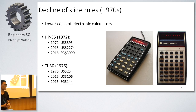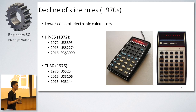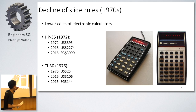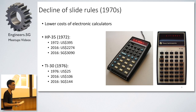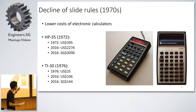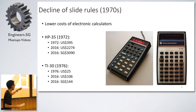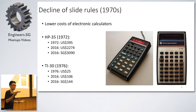So the decline of slide rules — there's a reason why these things do not exist today. The primary reason is the lower cost of electronic calculators. My dad bought this in 1973. You can see the cost of a calculator then — in 1972 it cost 395 US dollars, and that number is not adjusted for inflation, so it's much higher today, about 3,000 plus. Imagine buying a laptop just to do a calculator job. But by 1976, the cost of the electronic calculator had dropped so much that it was much more affordable, so by that time this thing was not worth it already.